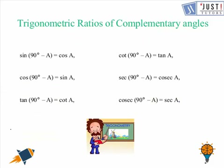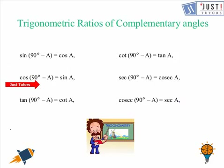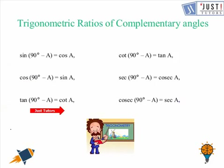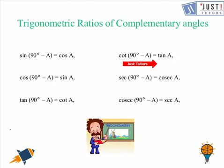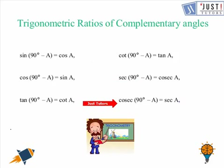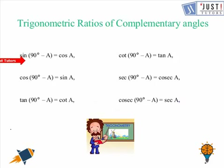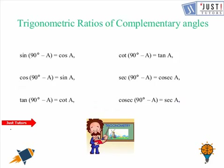Let us recall these identities: sin(90° − A) = cos A; cos(90° − A) = sin A; tan(90° − A) = cot A; cot(90° − A) = tan A; sec(90° − A) = cosec A; cosec(90° − A) = sec A. We need to always remember these equalities because we will use them in the questions further.